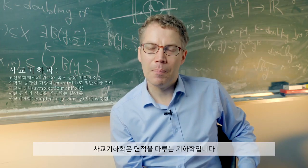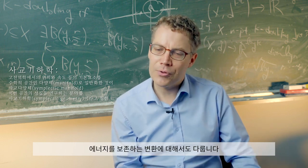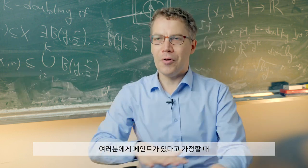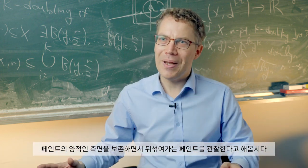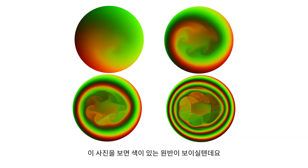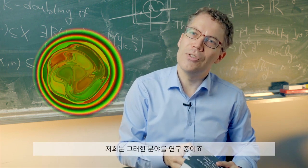Symplectic geometry is concerned with the geometry of area, but it's also concerned with the geometry of transformations that preserve energy. Suppose you have some paint and you look at transformations that preserve the amount of paint but just smear it out. These transformations can be pretty complicated — you color a disk, fix the amount of paint, and then start to stir. The more you stir, the more complicated the pattern you get. But there are limits to the complexity, and so we study this type of thing.